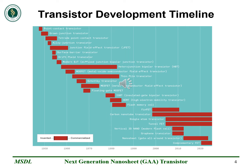This transistor development timeline shows the first transistor successfully demonstrated at the end of 1947, up to the currently under-developing Complementary FET (CFET). As you can see, many generations of transistor invention have been achieved over the past 75 years while abiding by Moore's Law.